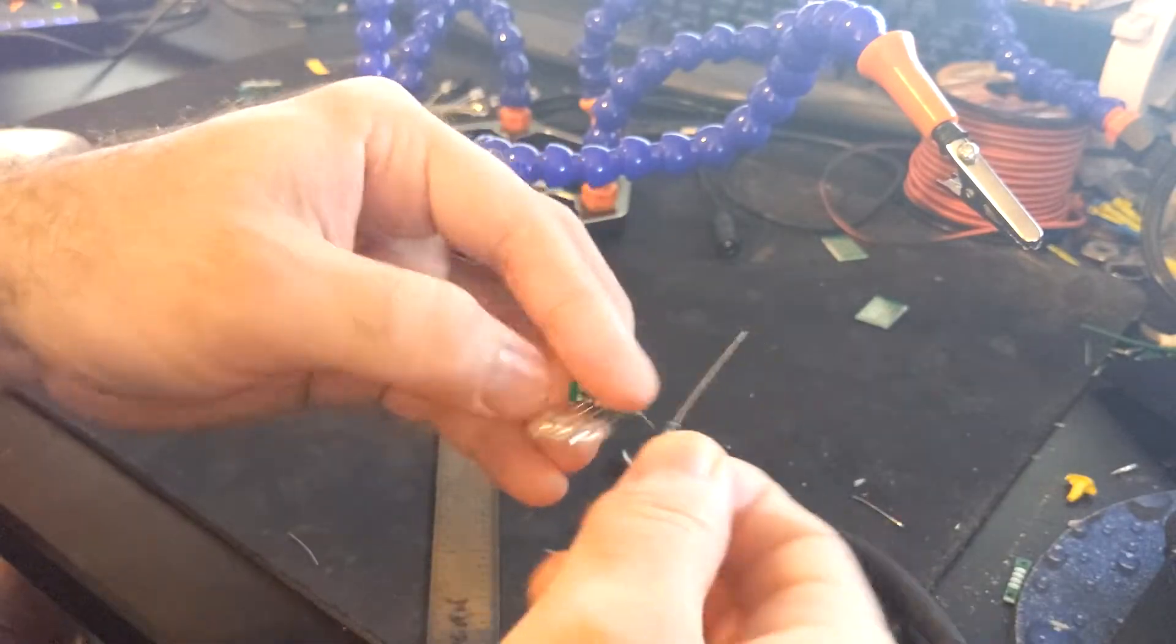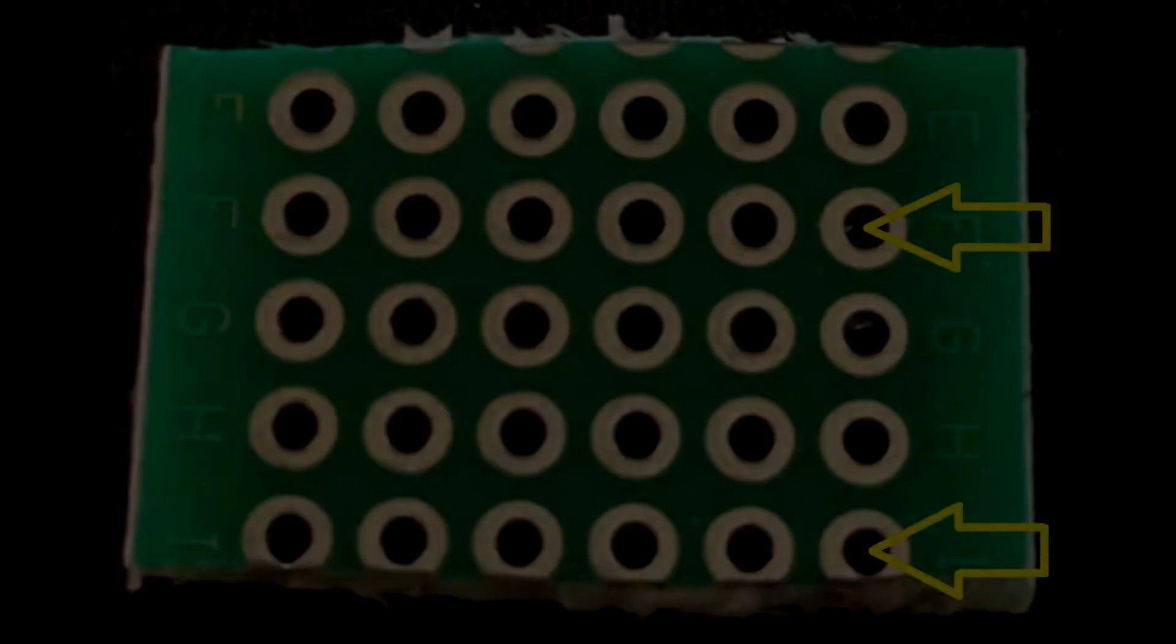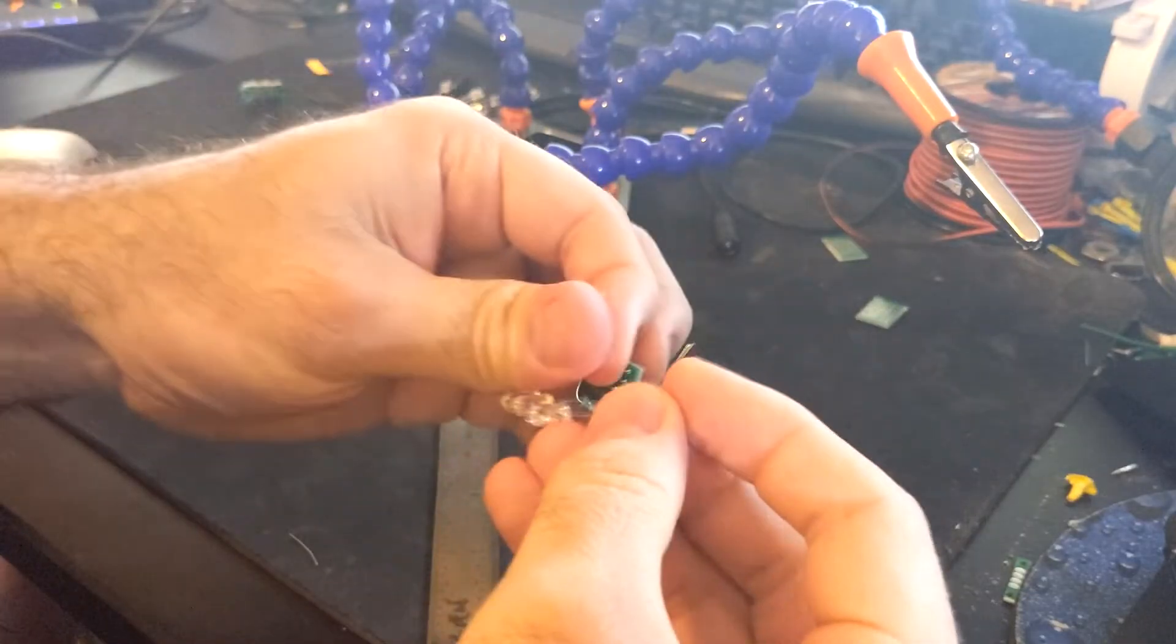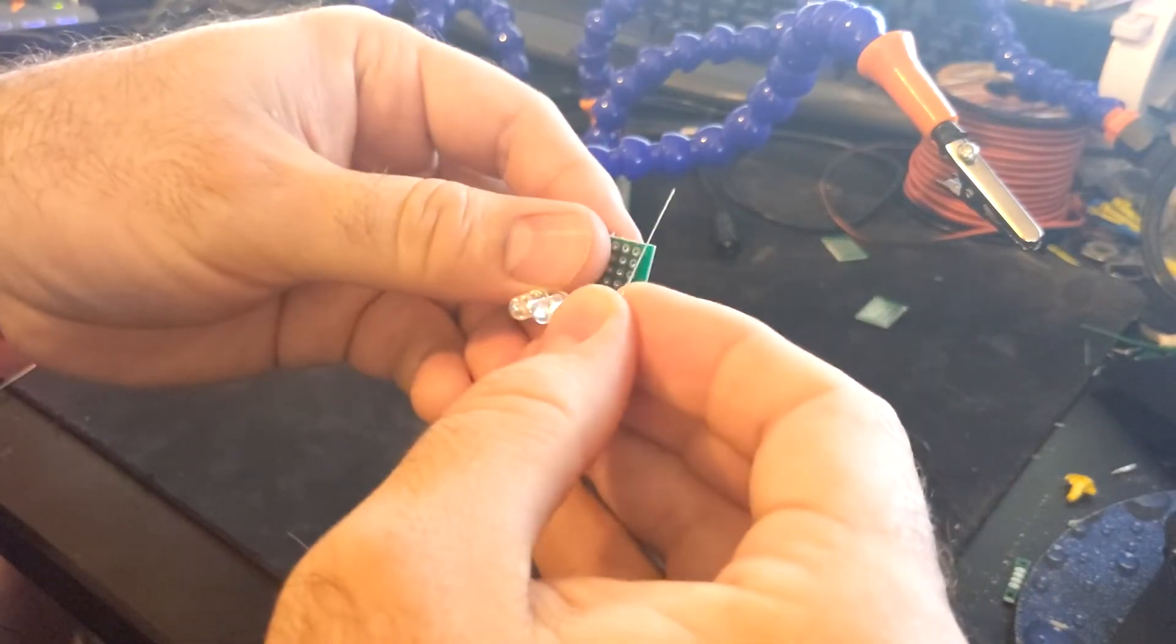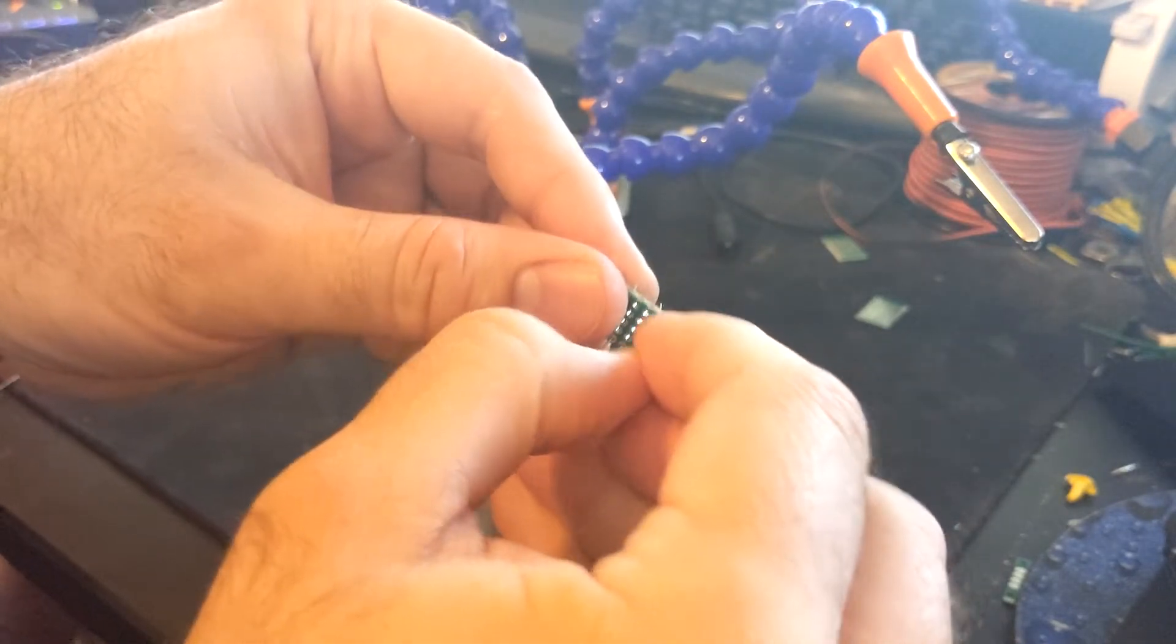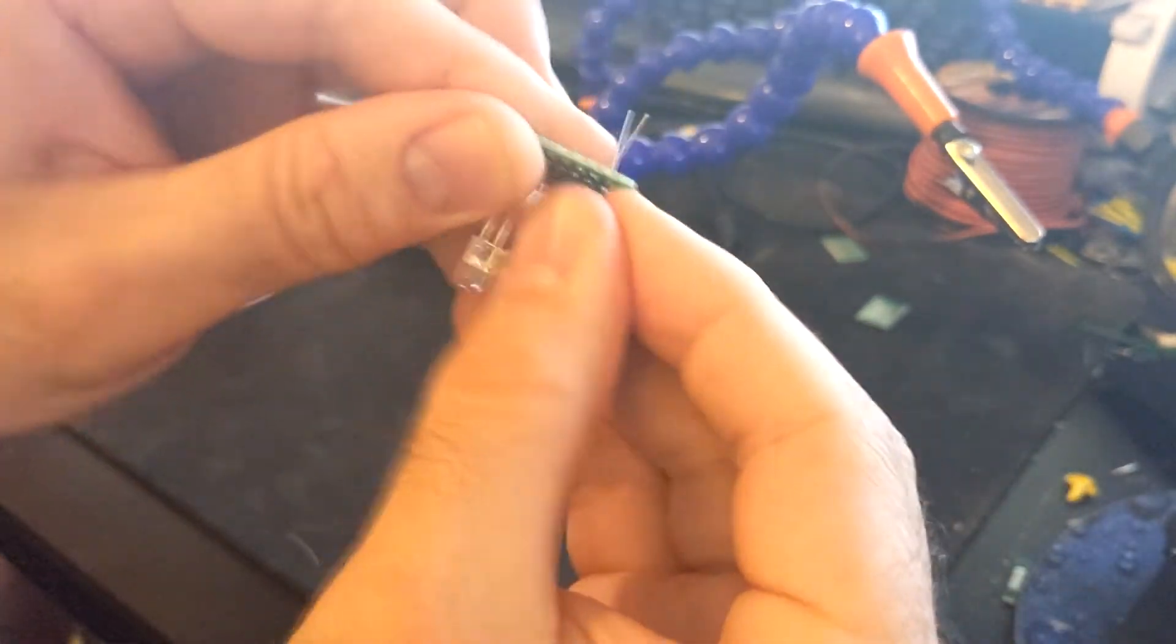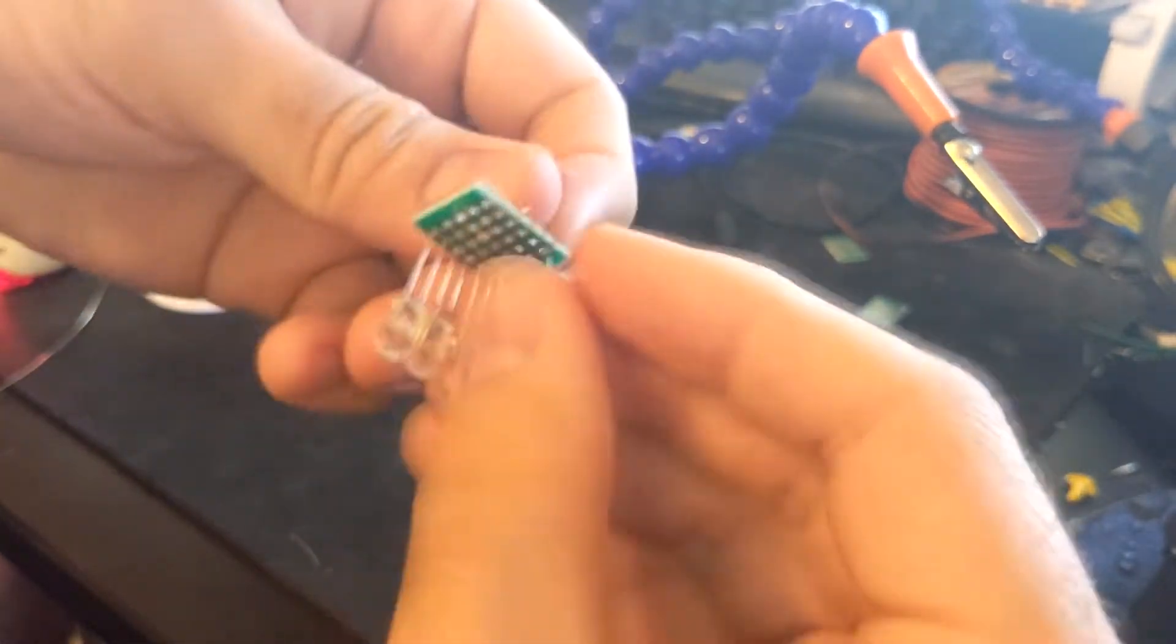Now we can install the resistor. It will need to go into this location. Make sure to leave some room to be able to bend the resistors to this side of the PCB board.